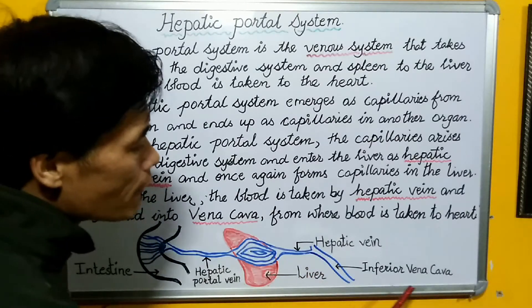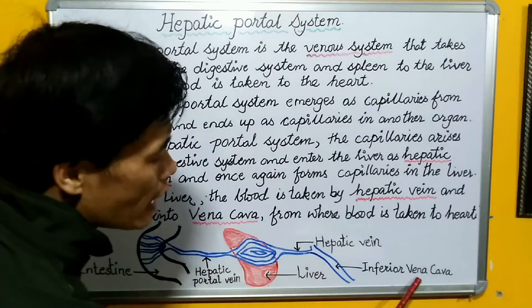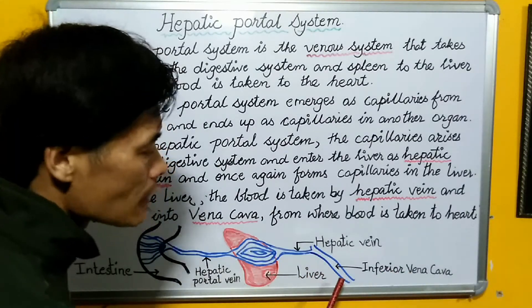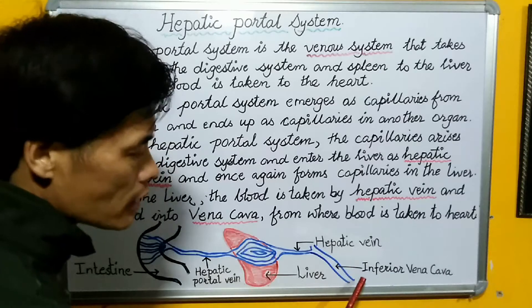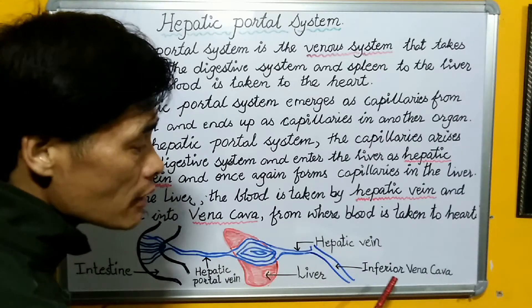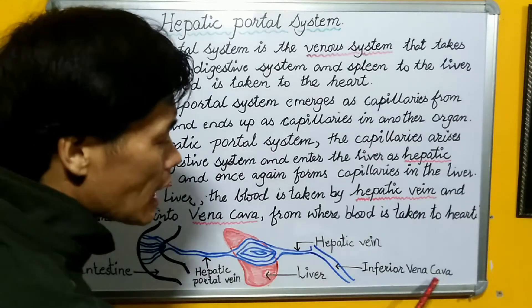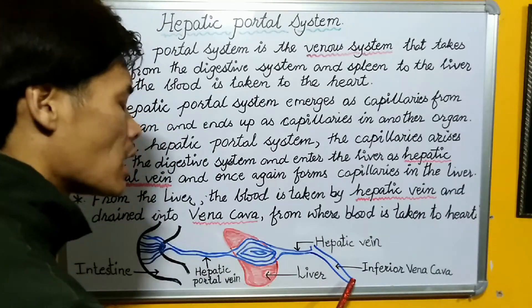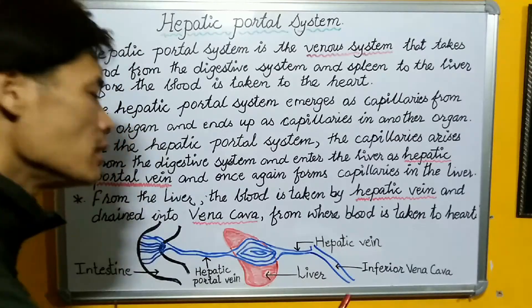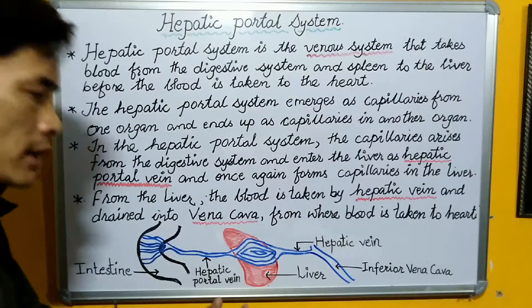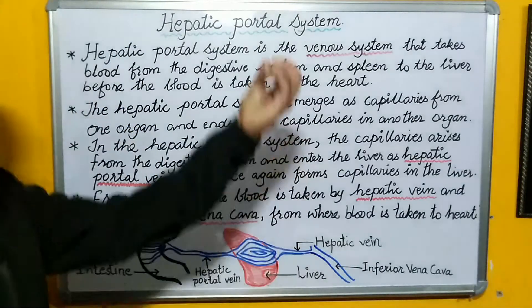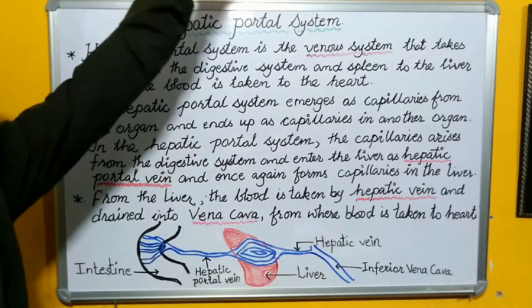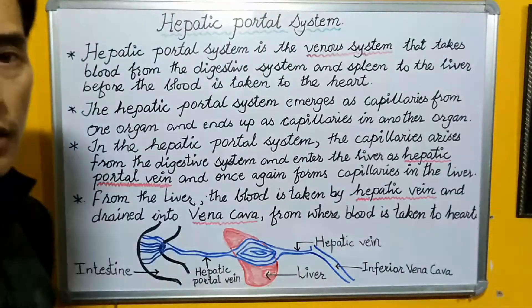In this case it is the inferior vena cava, and this inferior vena cava ultimately takes the blood into the heart.